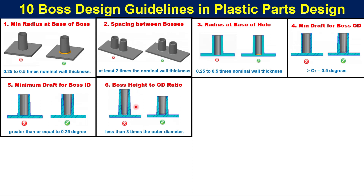Guideline 6: Boss height to OD ratio. A tall boss with draft will generate more material and a thick section at the base. As you can see in the picture, when draft is applied to a tall boss, the base becomes a thick section. It is recommended that the height of the boss should be less than three times the outer diameter.